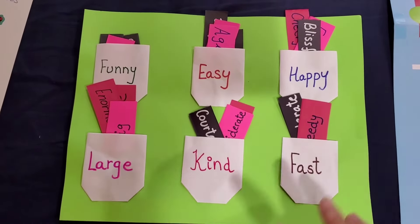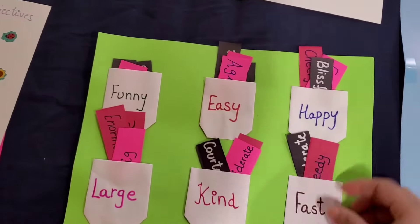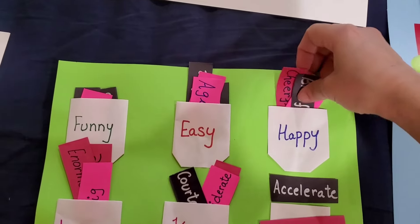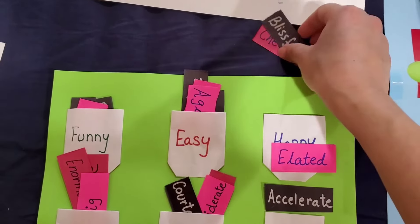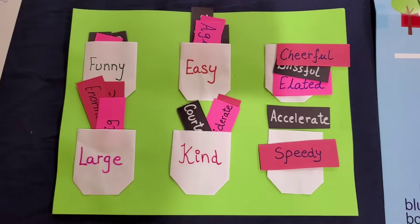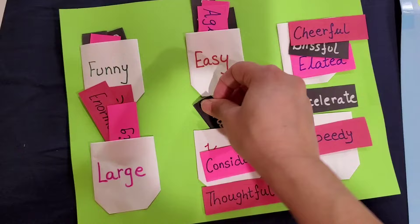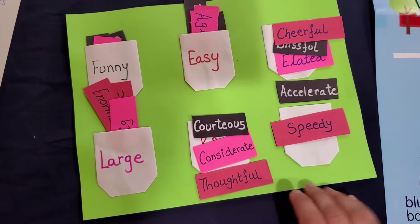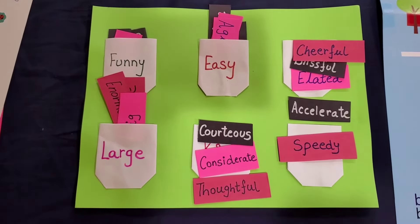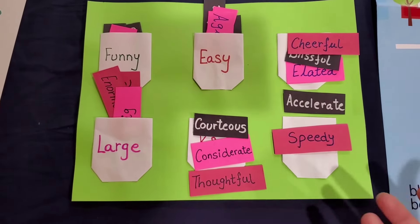Six topics with all the words that can describe a given adjective. For 'fast': speedy, accelerate. For 'happy': elated, blissful, cheerful. For 'kind': considerate, thoughtful, courteous. Here you're teaching children the different words that can be used to express the same thing. Rather than just saying 'happy,' you can say 'elated' or 'blissful.' You're expressing the same emotion with different words. Adjectives is really about learning more and more words to describe yourself or a situation.